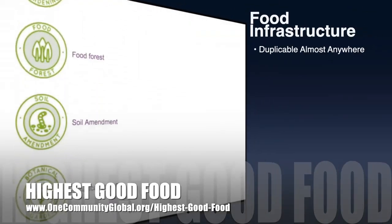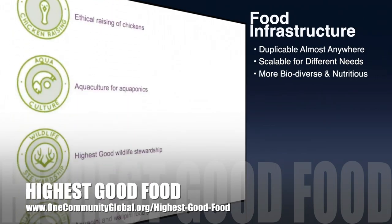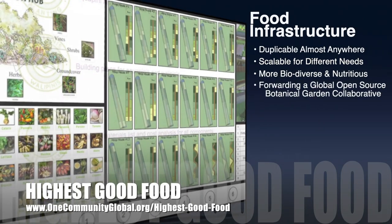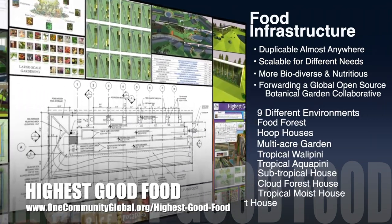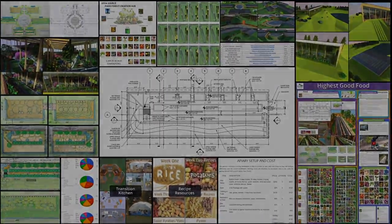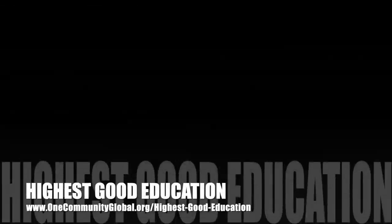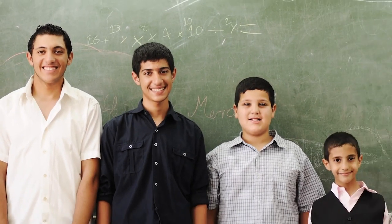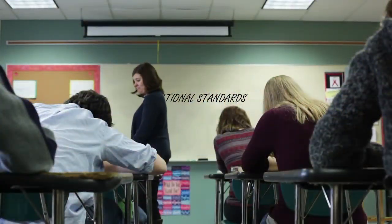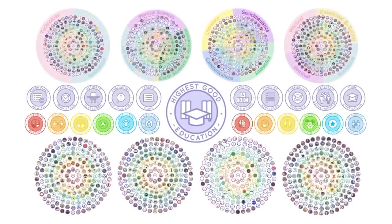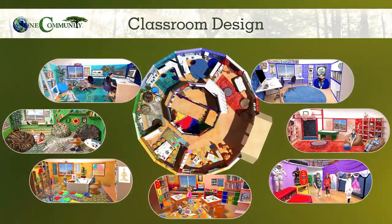One Community's approach to highest good food is duplicable almost anywhere, scalable for different needs, more biodiverse and nutritious, part of forwarding a global open source botanical garden collaborative, and includes nine different free shared and duplicable growing environments. The highest good education component is complete and nearly ready to launch once on the property — designed for all age groups, adaptable to any schooling environment, inspiring and fun, including national standards, all subjects, lesson plans, teaching and learning strategies, and classroom design.